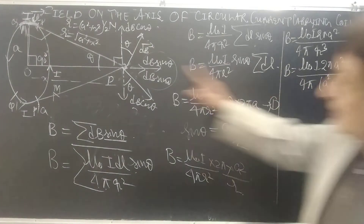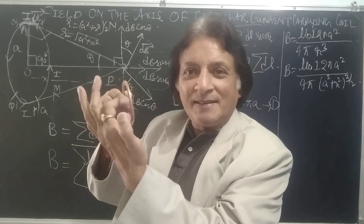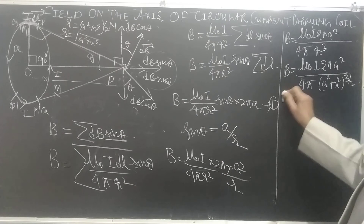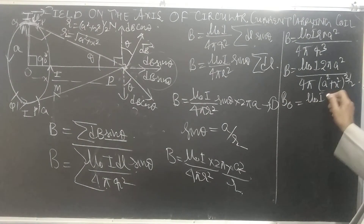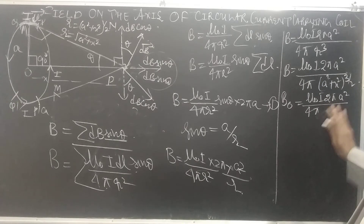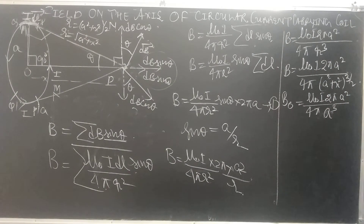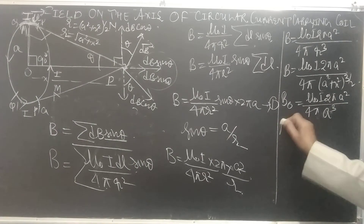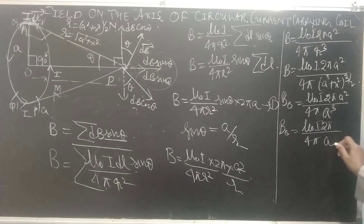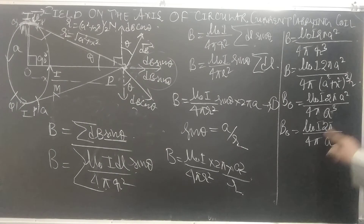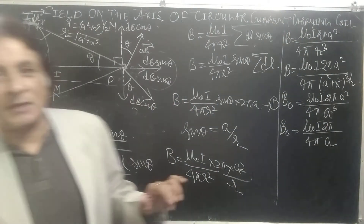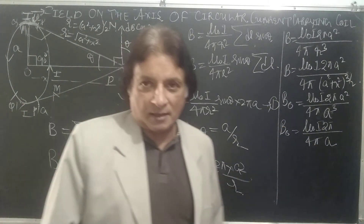Now a special case: if we come to the center of the coil, point P shifts to the center, so X = 0. At center: B_center = μ₀·I · 2π·a² / (4π·a³). The 2π and the a² terms simplify with a³, giving B_center = μ₀·I / (2a). We keep μ₀/4π = 10⁻⁷ in numerical problems. Now the special case when point P is very far away.